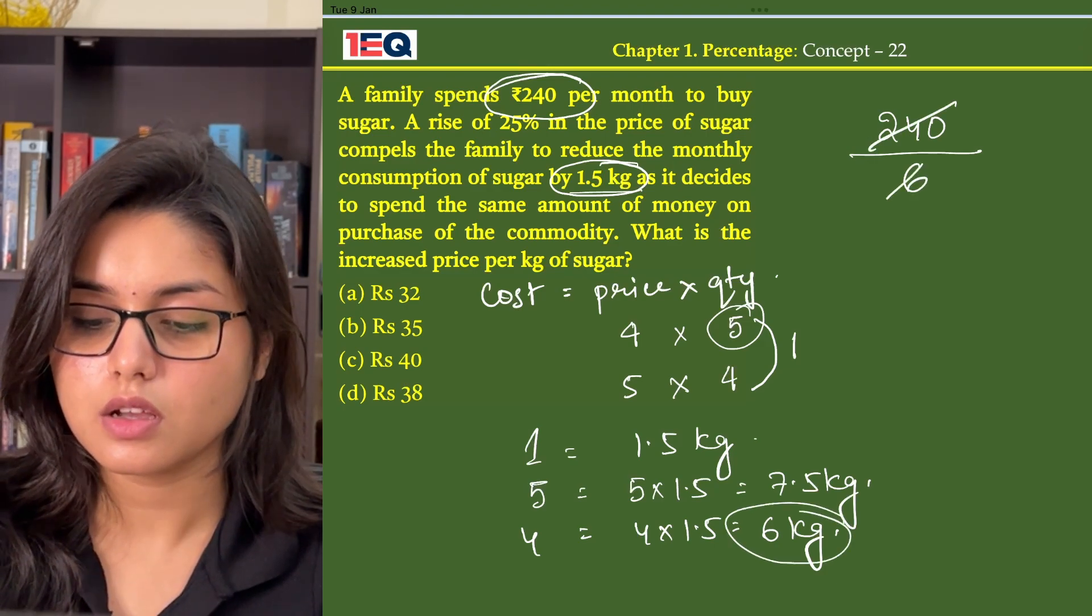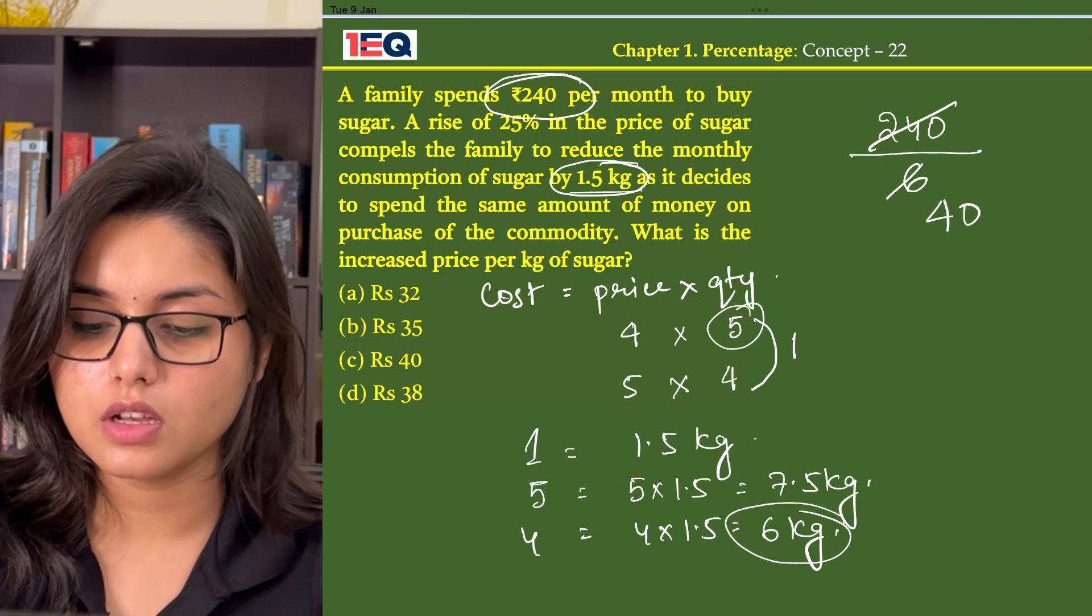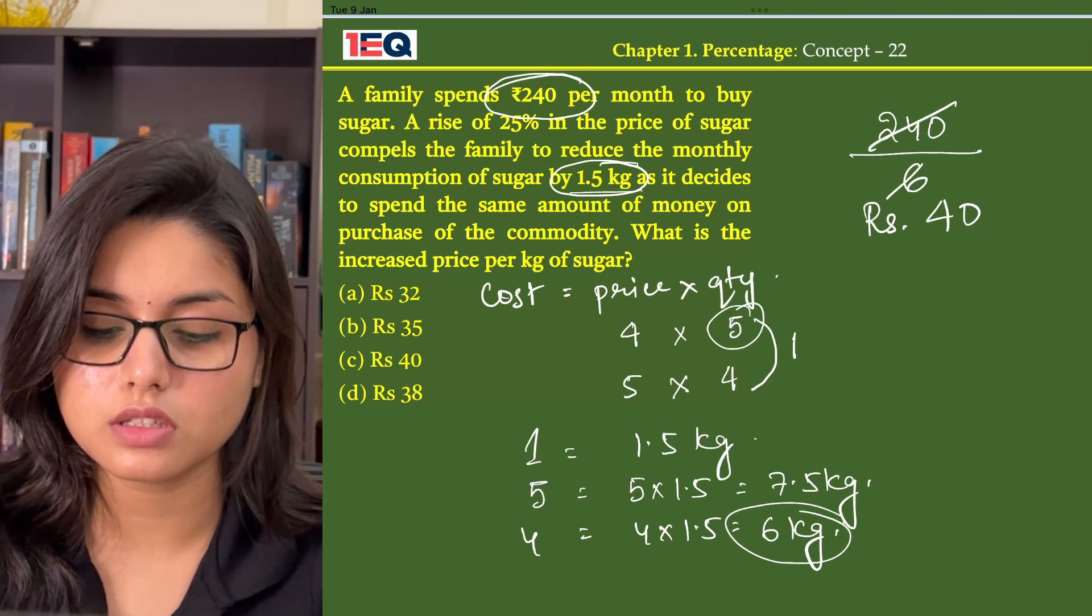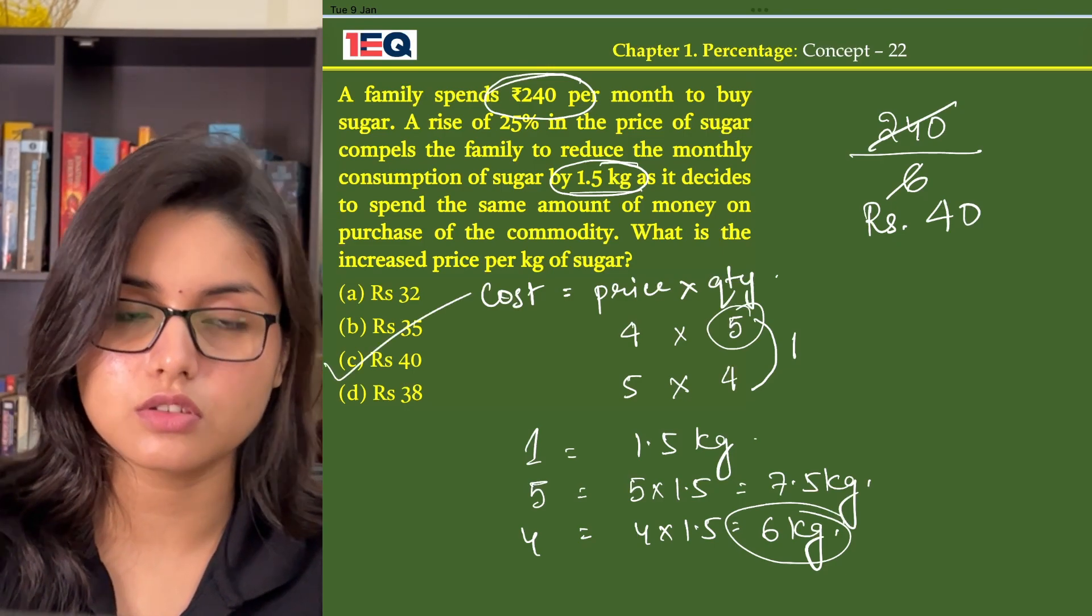So divide it by 6, we get 40. So the increased price per kg of sugar is ₹40 per kg. The answer to this question is option C.